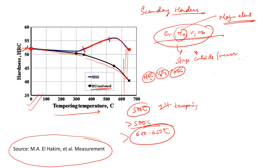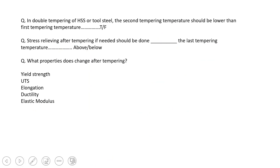Now the question: in double tempering of HSS or tool steel, should the second tempering temperature be lower than the first? The answer is false — the second tempering temperature should be higher than the first.